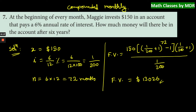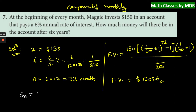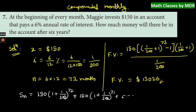This problem can also be done another way. The amount deposited at the beginning of the first month will get interest for 72 months, so it becomes 150 into (1 + 1/200)^72. The second deposit, at the beginning of the second month, gets interest for 71 months: 150 into (1 + 1/200)^71, and so on. By summing all these terms, you get the same future value.